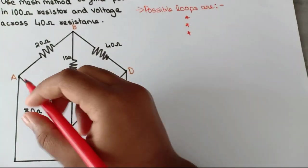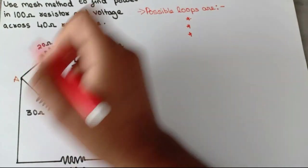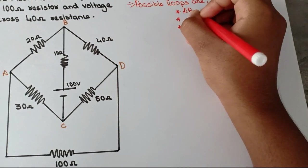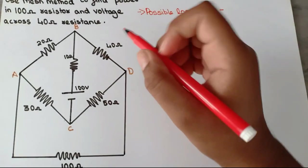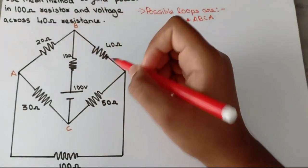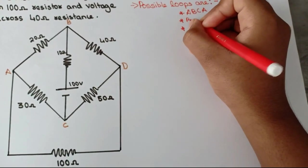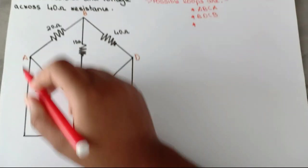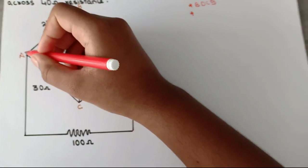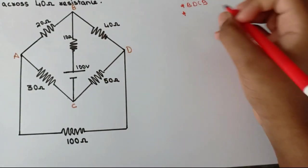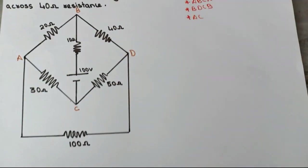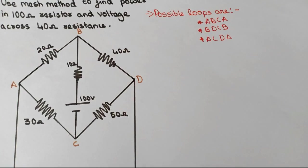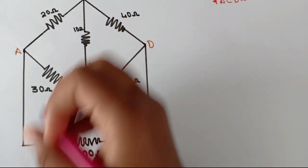The first loop will be A-B-C-A. The second loop will be B-D-C-B. And the third loop is the bigger one — A-C-D-A. You already know the next step: marking the mesh currents.